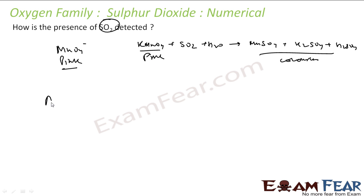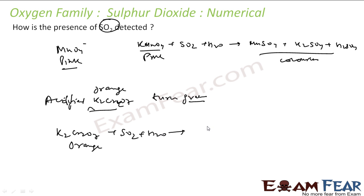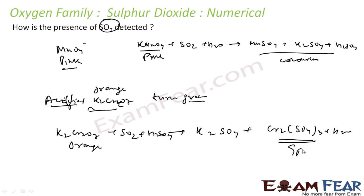Another test: acidified K2Cr2O7 (potassium dichromate) will turn from orange to green in the presence of SO2. The reaction of K2Cr2O7 with SO2 and H2SO4 gives K2SO4 and Cr2(SO4)3 and water — and the Cr2(SO4)3 product is green.